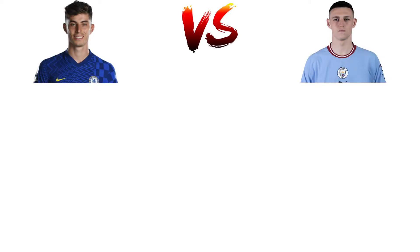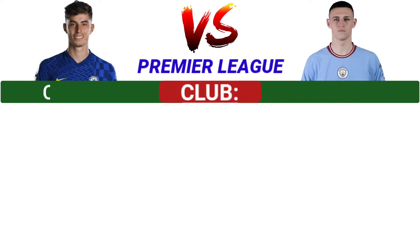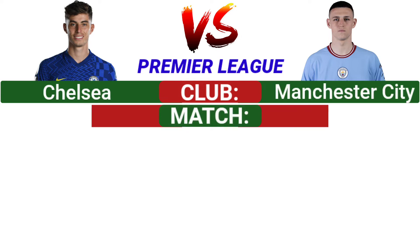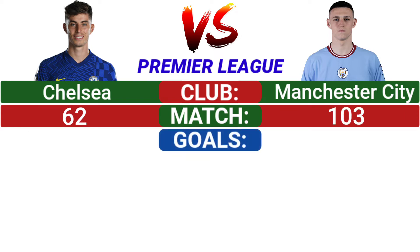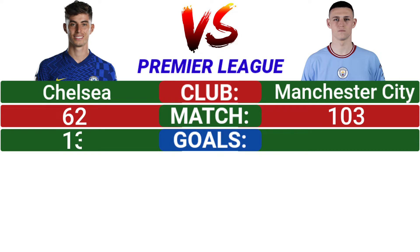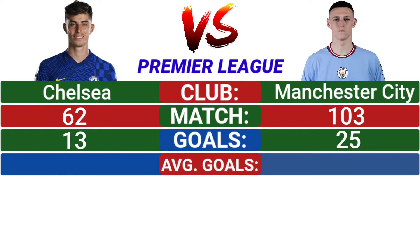Now let's compare their Premier League statistics. In the Premier League, Havertz played for Chelsea and Phil Foden played for Manchester City. Havertz made 62 appearances and Phil Foden made 103 appearances. Havertz scored 13 goals and Phil Foden scored 25 goals. Havertz's average goals per match is 0.20, and Phil Foden's is 0.24.